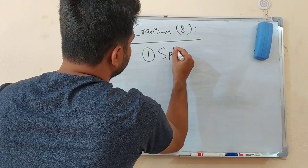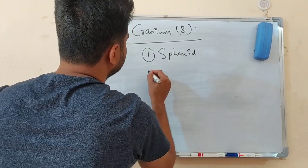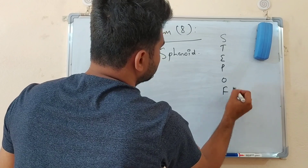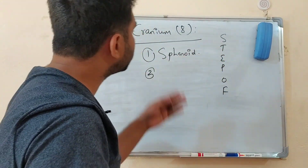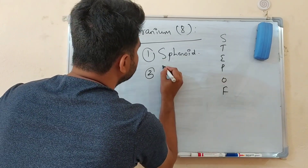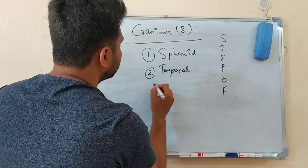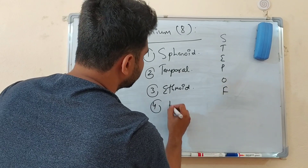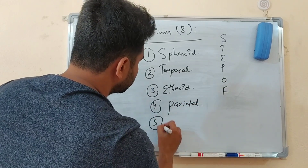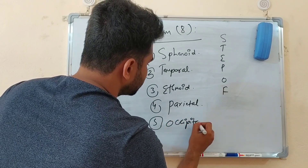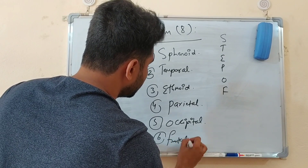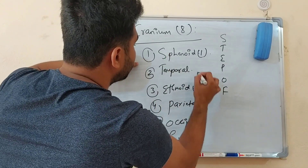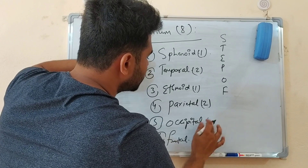The mnemonic to remember the cranium bones is T, E, P, O, F — not necessarily in that sequence. T is for Temporal, E is for Ethmoid bone, P is for Parietal bone, O is for Occipital bone, and F is for Frontal bone. Now we also need to remember Sphenoid and Ethmoid — Occipital is 1.